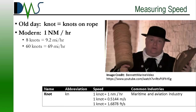Speed is also complicated because it derives from that measurement of nautical miles. The knot is formally defined as the distance of nautical miles traveled in one hour. In the old days, we actually used to measure that by throwing a log over the side with a knotted rope and measuring how many knots paid out in a certain time. Today we have much more precise systems of measurement, but the unit itself has stuck around as nautical miles per hour.